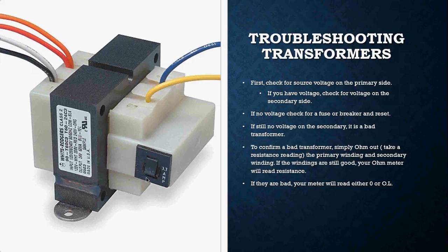First, check whether the fuse has popped. Sometimes you can reset it, but if that fuse does pop, we're not just going to reset it and walk away — there's a reason why it popped. Notice the amperage rating: 3.7 amps, which is our volt amp rating, meaning our secondary side can only handle 3.7 volt amps. If that fuse pops, we have a problem on the secondary side — it could be shorted, we could be over-amping it, or there could be a wiring issue. You have to dig in and find out why.